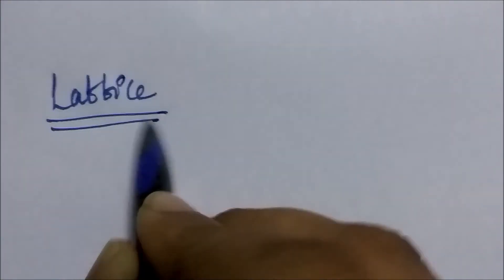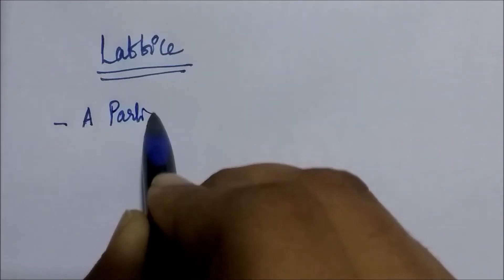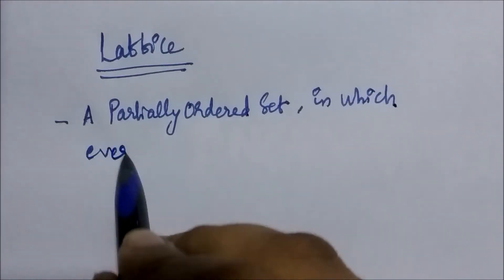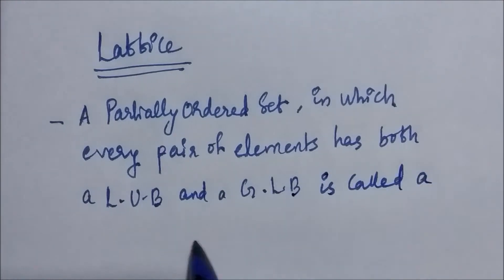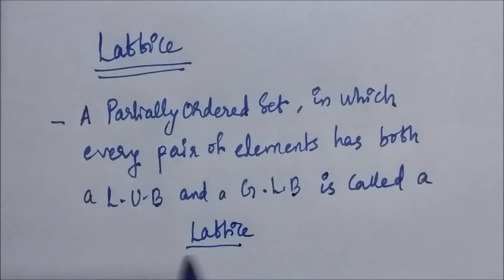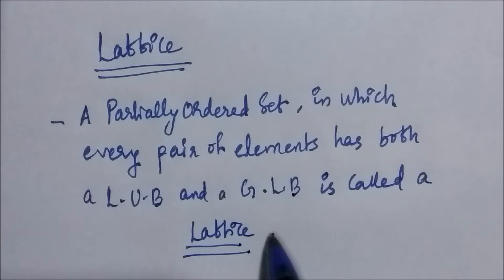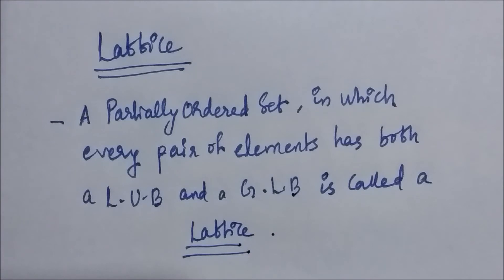Now we are ready to define what is a lattice. A lattice is a partially ordered set in which every pair of elements has both a least upper bound and a greatest lower bound. So a lattice is a poset where for every pair of elements, both the LUB and GLB must exist.